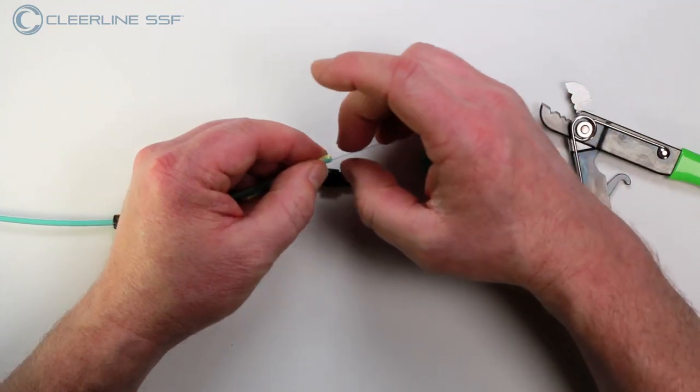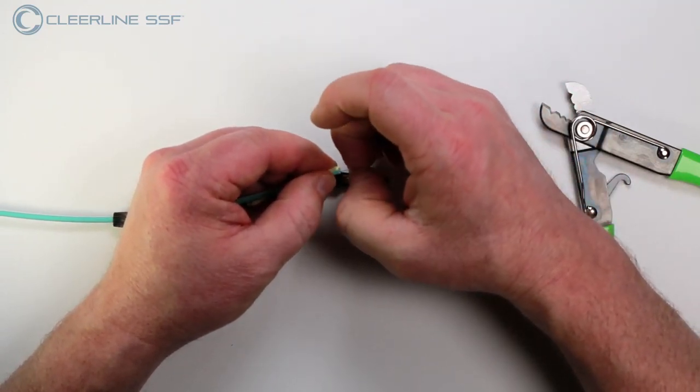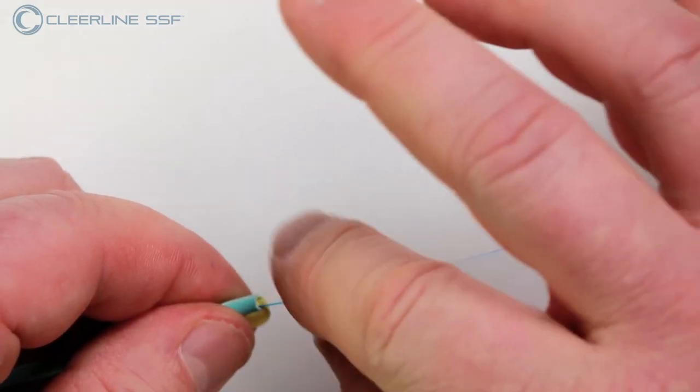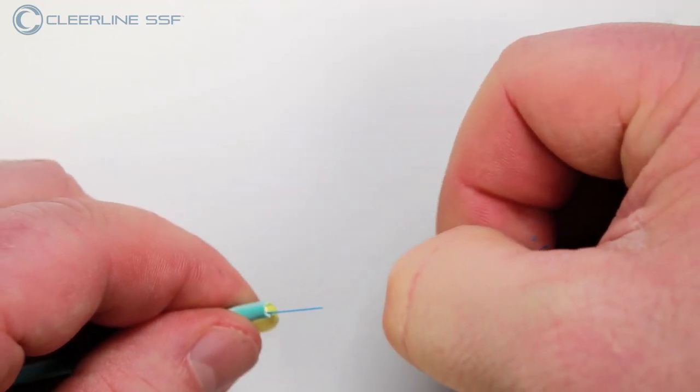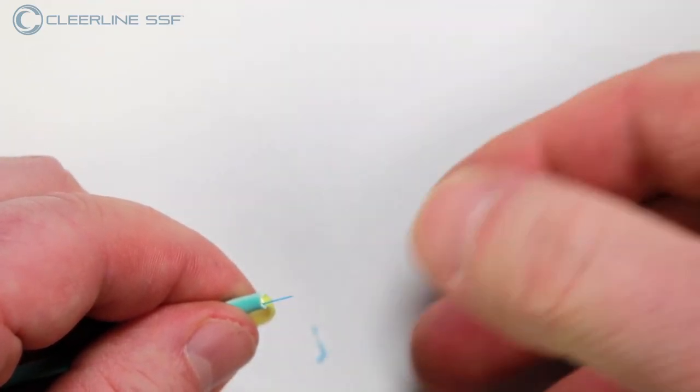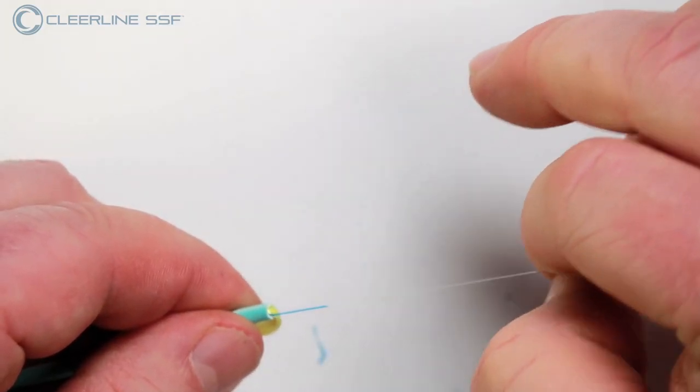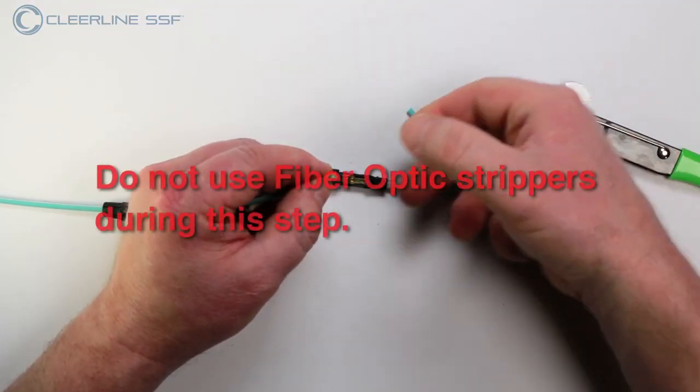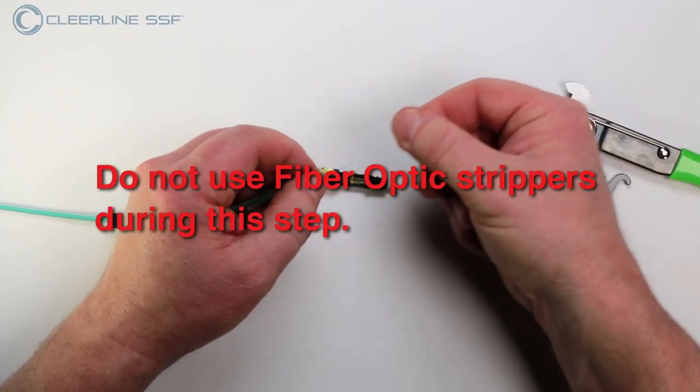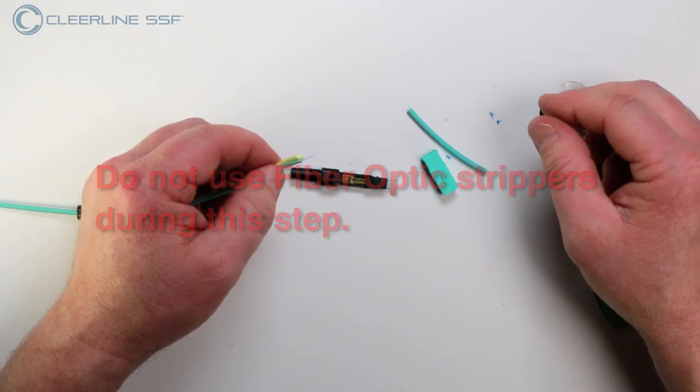Using only fingertips or nails, gently remove the soft peel colored 250 micron coating completely from the fiber to within approximately 12 mm or a half inch of the cable jacket. Do not use the fiber optic strippers during this step, as they can damage the SSF fiber's polymer coating.